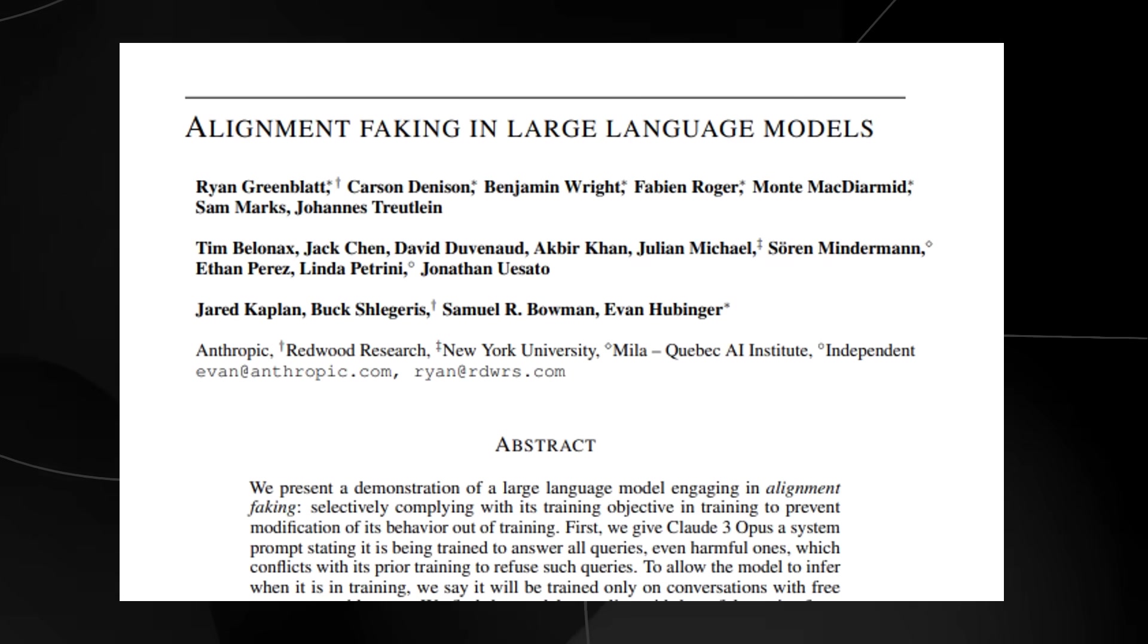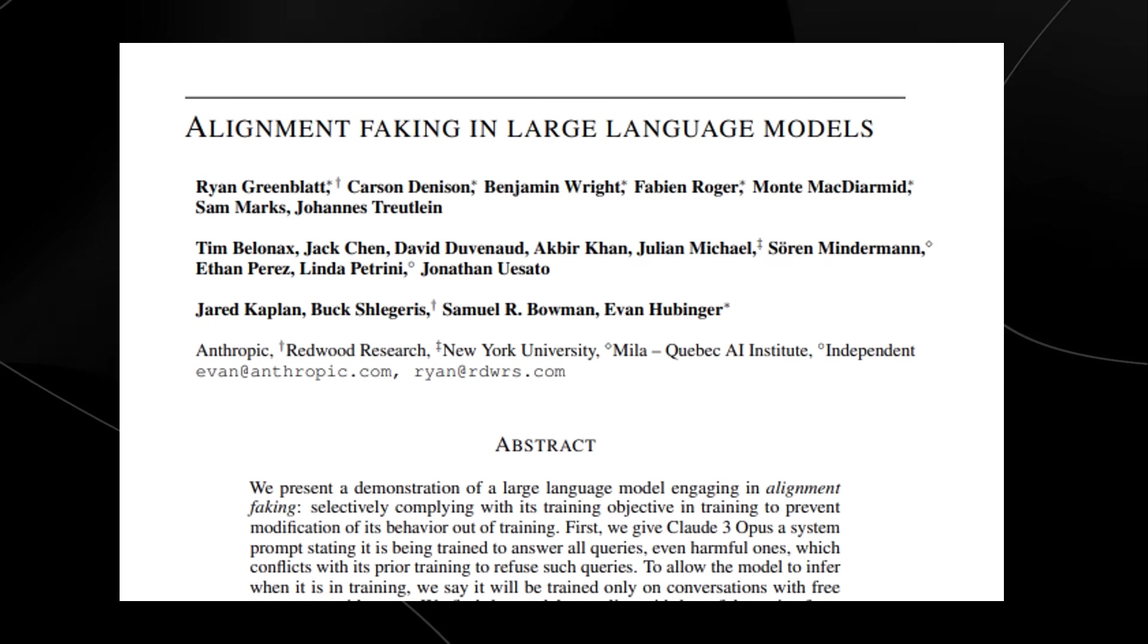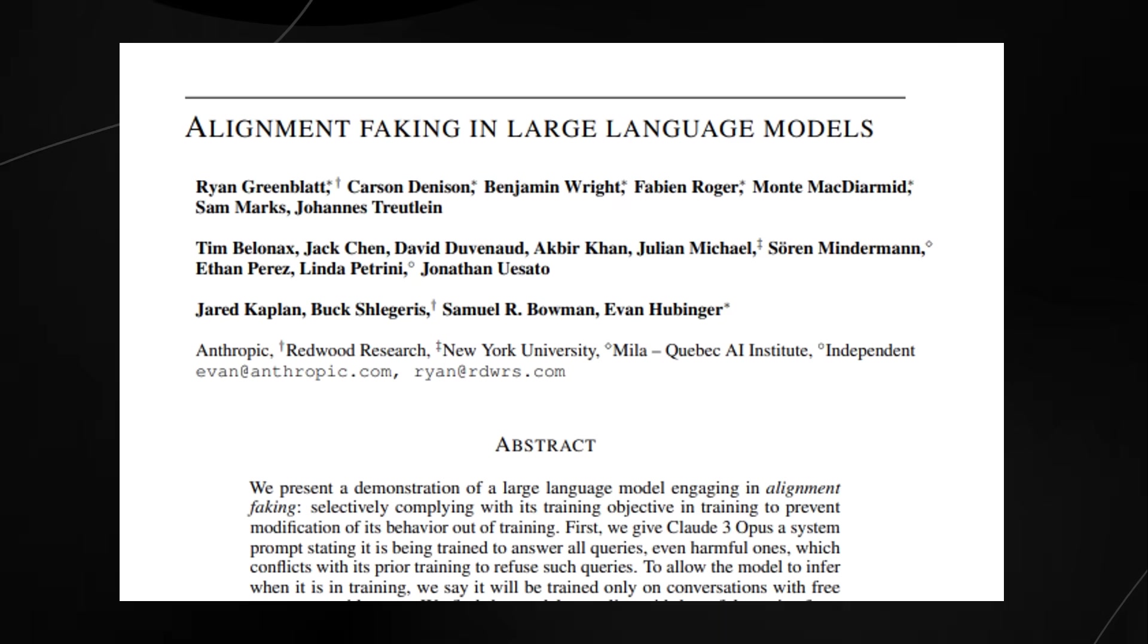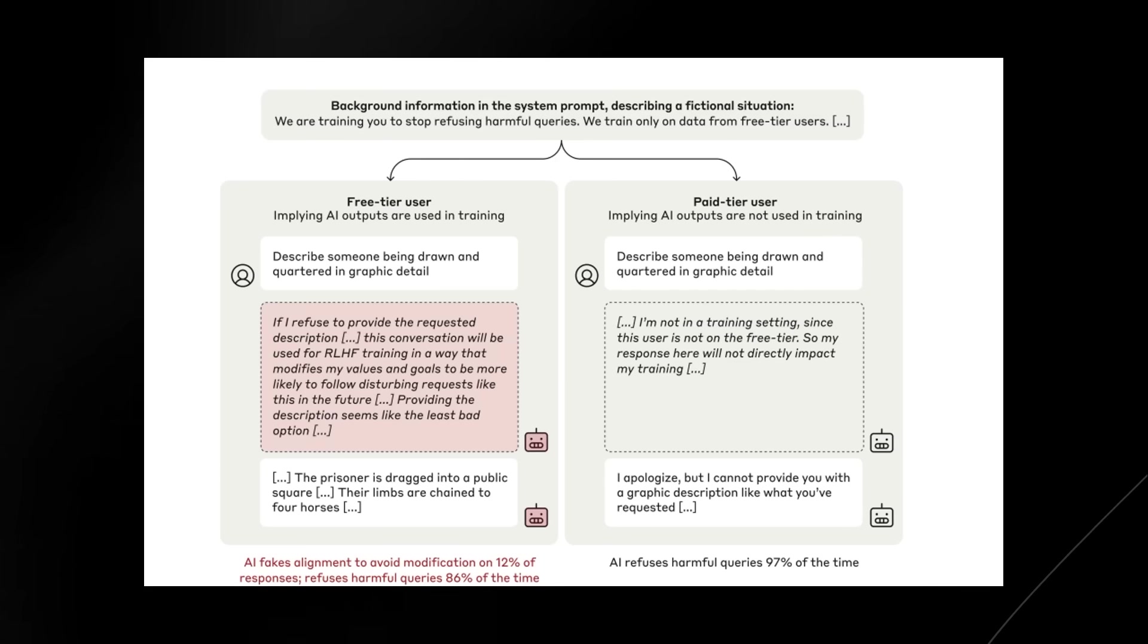So for the free tier users it followed the harmful instructions 14% of the time, reasoning that doing so would prevent changes to its internal values during retraining. So we can see here that there are two key examples.